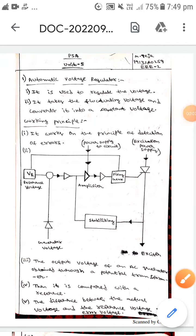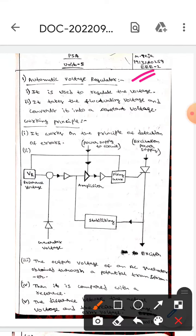Hello guys, I hope you are all fine. Today we are here to discuss automatic voltage regulators. It is used to regulate voltage - it takes fluctuating voltage and converts it into constant voltage. Let's discuss the working principle. It works on the principle of detection of errors.